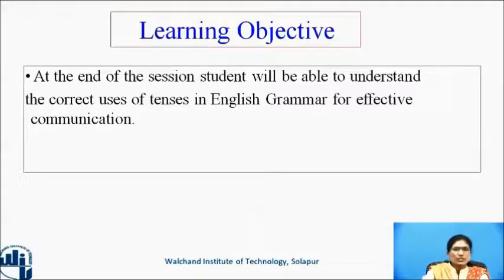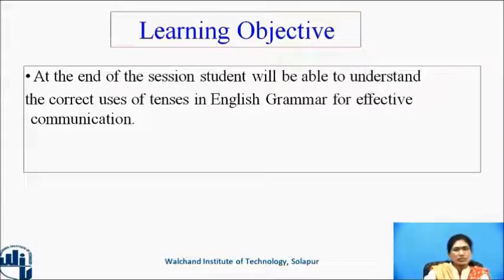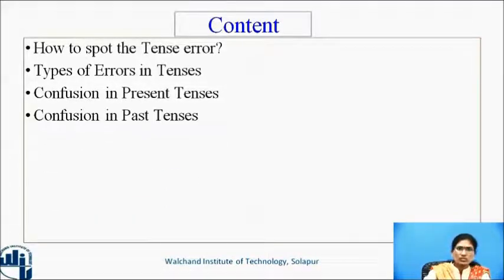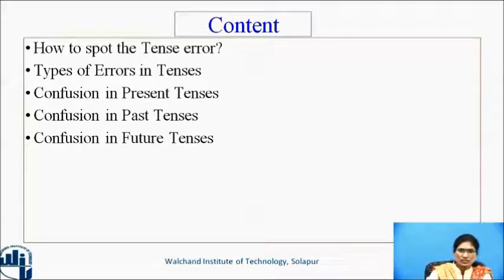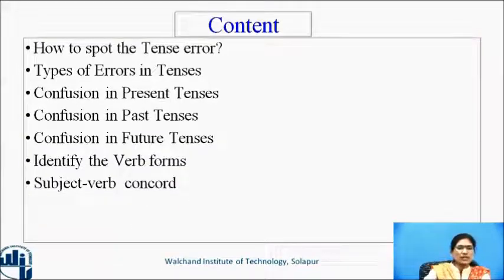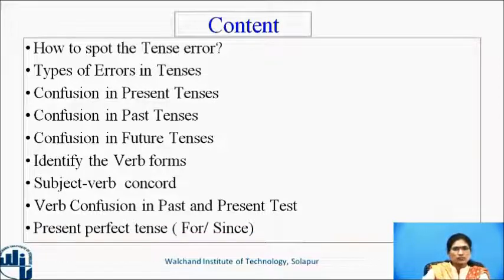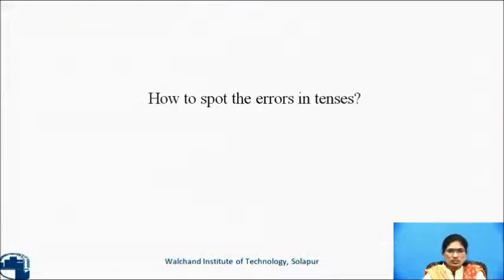Learning objective: at the end of the session, students will be able to understand the correct usage of tenses in English grammar for effective communication. The content covers: how to spot the tense error, types of errors in tenses, confusion in the present tense, confusion in the past tense, confusion in the future tense, identifying verb forms, subject-verb concord or subject-verb agreement, verb confusion in past and present tense, present perfect tense, and for or since.